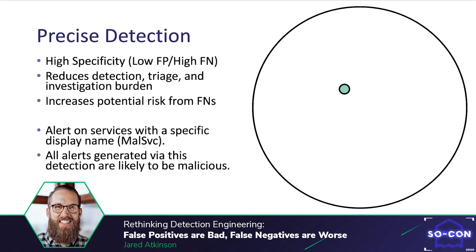An example of a precise detection might be to look for services with a specific name — in this case we're looking for 'mal_svc', observed to be used by an attacker as part of a malicious attack campaign. It is unlikely for a legitimate service to use this name so all alerts should represent malicious activity, but it is also trivial for attackers to avoid this detection.